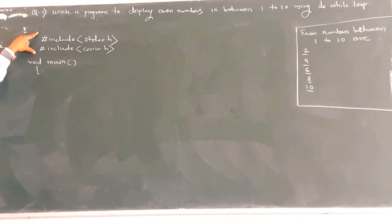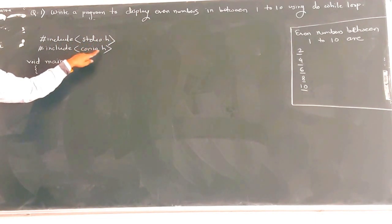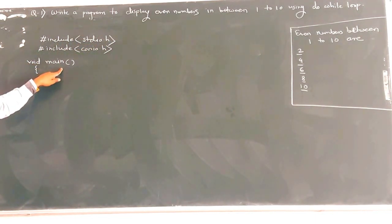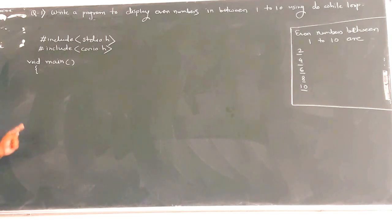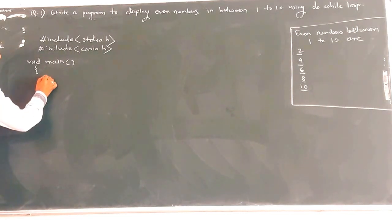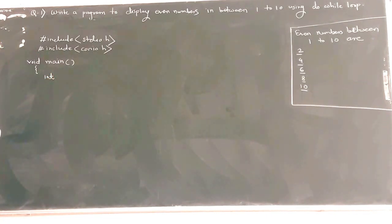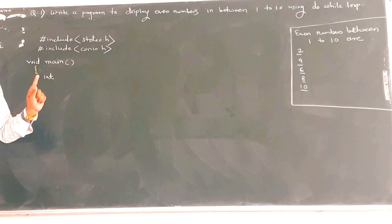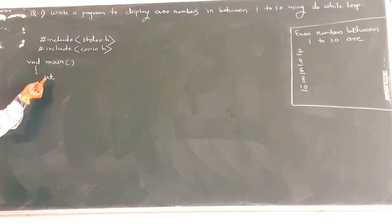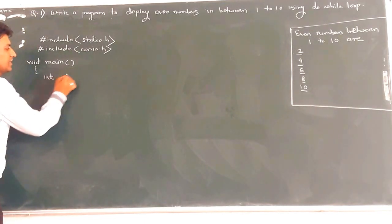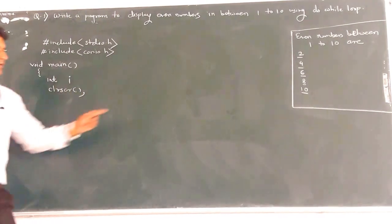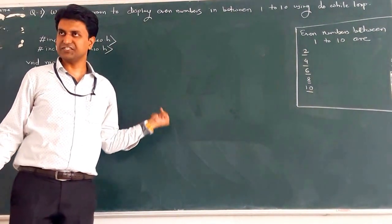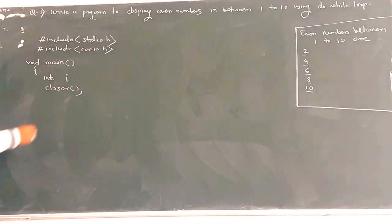Now let's write the code for this problem statement. The first statement is to include the header files stdio.h and conio.h. After that, start the program by writing the main function — that is, void main. The third step is to write the body of the main function. In the body, first is the declaration part. If we need a variable, we declare it — for example, variable i. After that, call clrscr to clear the screen, erasing any previous output on the console.